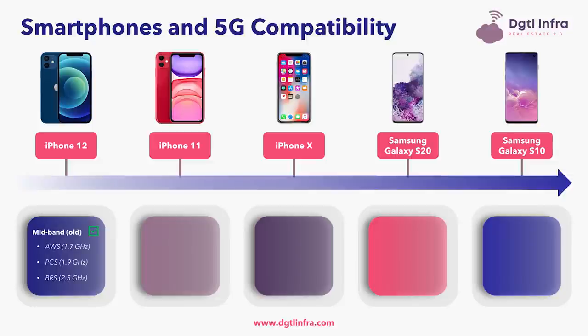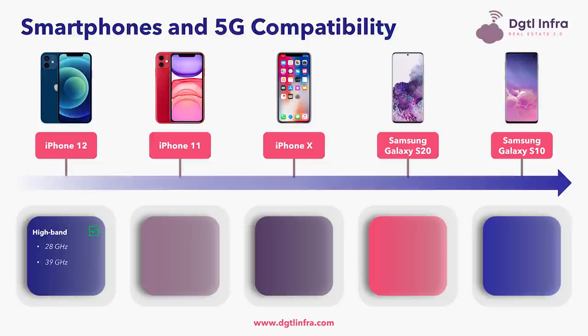The iPhone 12 is also compatible with mid-band spectrum — what we'll call old mid-band, because it was used in 4G and LTE — including AWS at 1.7 GHz, PCS at 1.9 GHz, and BRS at 2.5 GHz. It is also compatible with new mid-band spectrum, meaning recently released spectrum such as CBRS and C-band at 3.5 GHz. Finally, the iPhone 12 is also compatible with high-band spectrum, including both 28 GHz and 39 GHz.